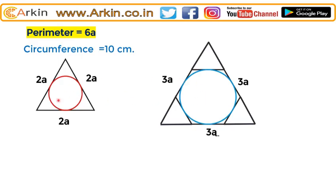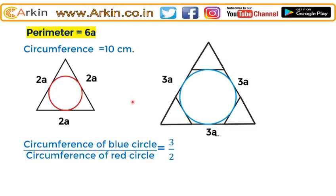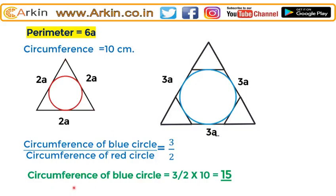We can see this is an equilateral triangle of side 2a and this is an equilateral triangle of side 3a. So the circumference of the blue circle will be proportional in the same way as the red circle. The circumference of the blue circle divided by the circumference of the red circle equals 3 by 2. Therefore, the circumference of the blue circle is 3/2 into 10 = 15 centimeters.